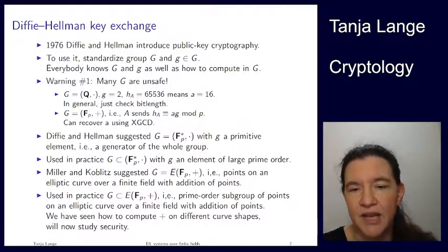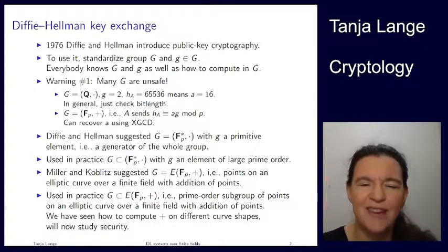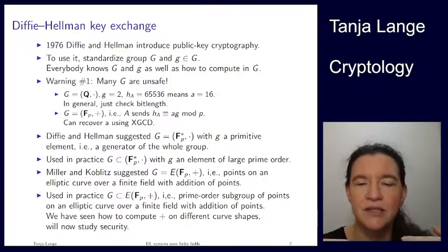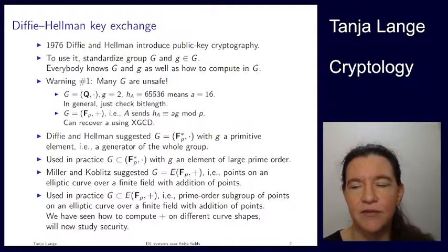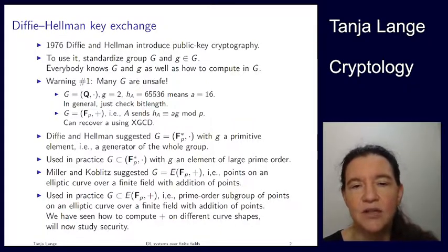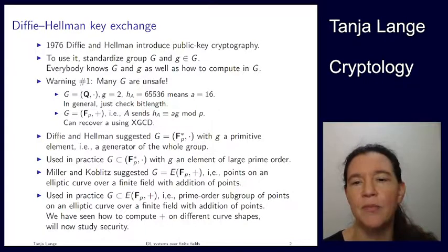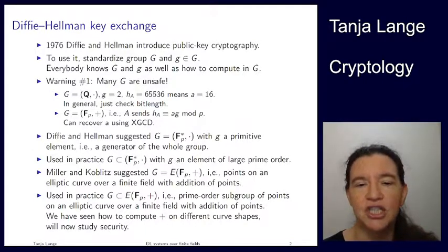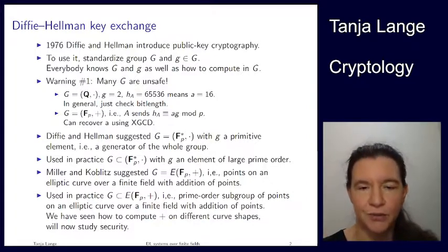We have also seen with the Pohlig-Hellman attack that normally we want to have a subgroup of this, so in practice we want G to be a subgroup with an element of large prime order. If you have anything related to the decisional Diffie-Hellman problem you actually need G itself to have prime order, because subgroups give the attacker more power to break it.